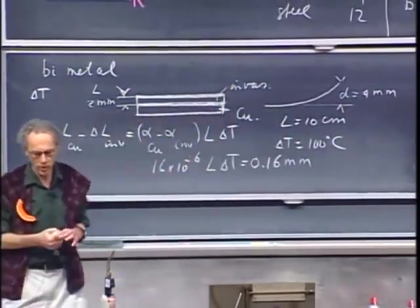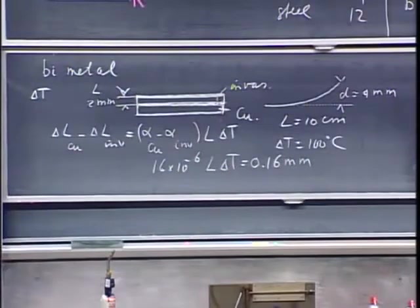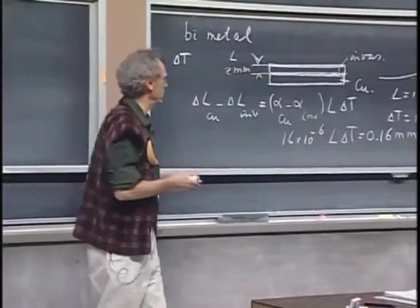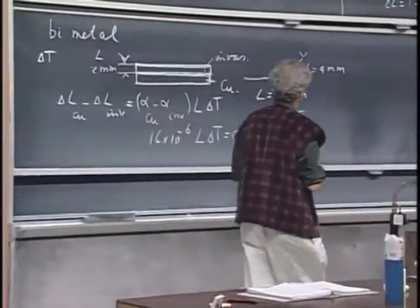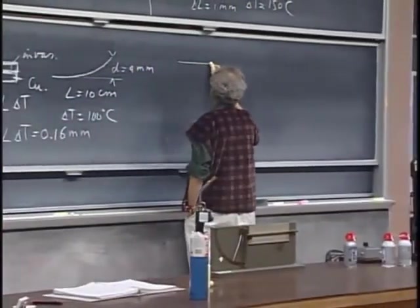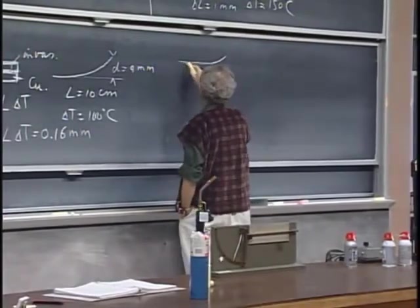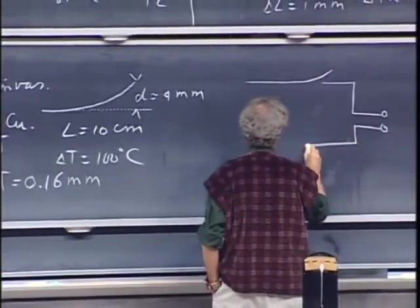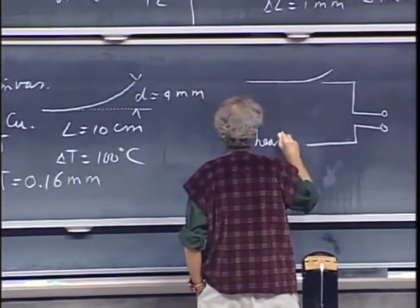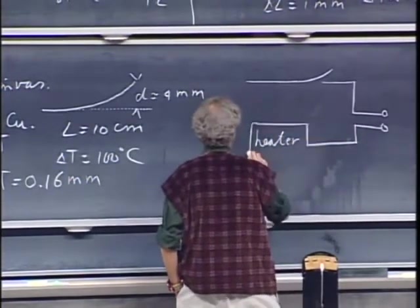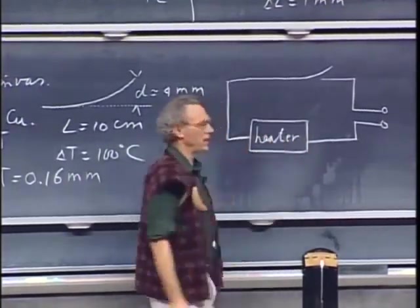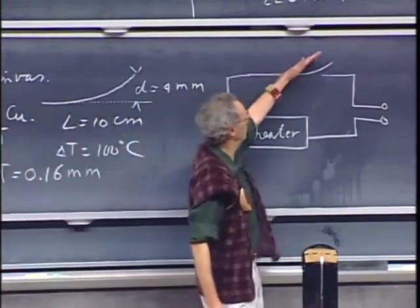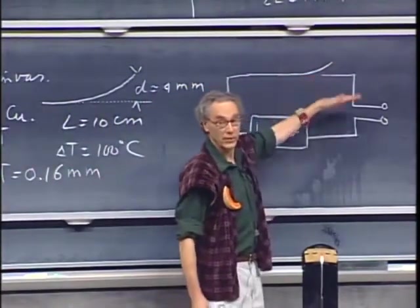So this thing is being used for thermostats. You break and make a contact in a heating system, which could, for instance, be as follows. Here would be your bimetal very schematically. You plug it in the wall here, your 110 volts. Here is your heater. And you let it sit like that. And when it's cold, this is down. It's not curled. And the heater works. And when the room temperature goes up, this starts to curl. It opens. And that's a thermostat.